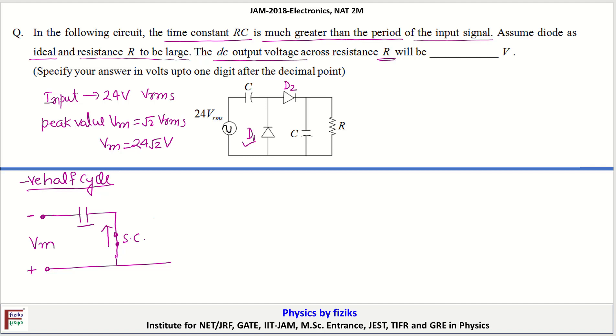Diode conducts in this direction. So polarity of the voltage across capacitor is VC. D2 is open circuited because it is reverse biased. So this is capacitor C and this is resistance R.